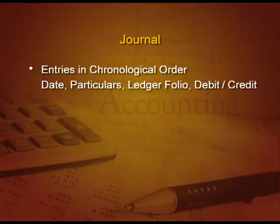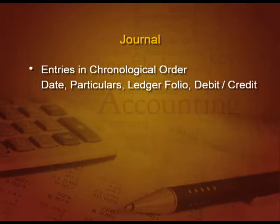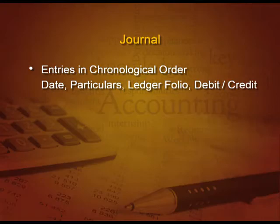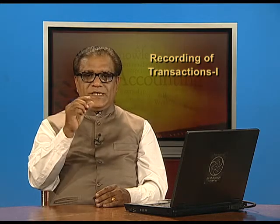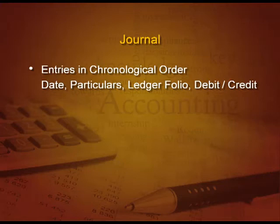What is a journal? A journal records entries in chronological order, that is date-wise order. There are four columns in a journal. The first column is the date — the date of the transaction. Then there is the particulars column, where we write what is to be debited and what is to be credited. Then there is the ledger folio column, a very small column in which we write the page number of the ledger where this particular account or entry is noted.